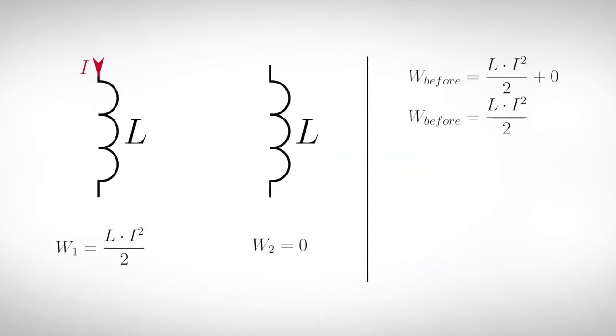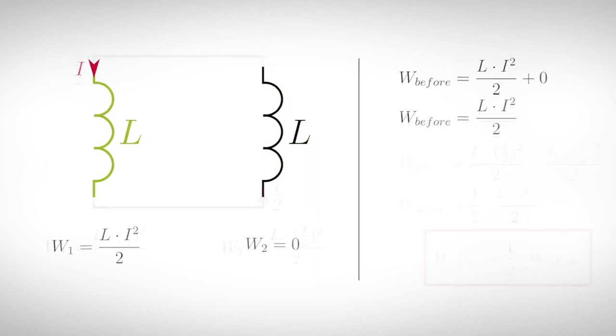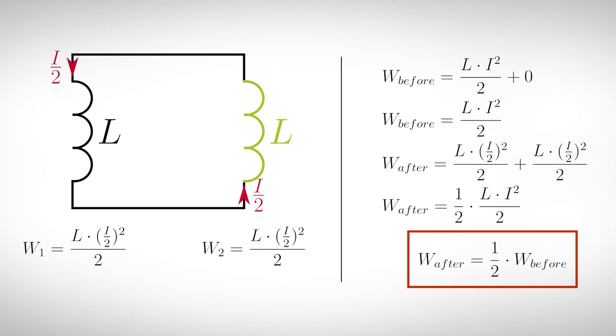Now we have seen what we can do with just switches and capacitors. But there is a second important storage element in electronics, the inductor. A similarity to the capacitor paradox can also be observed in inductors. We can take two inductors and let a constant current flow through one of them. Next we connect a second inductor in parallel. A magnetic field will build up in the second one and energy will be transferred to it. Now only half of the original current flows through both coils. If we again calculate the energy before and after, we see that half of the energy is lost in the exchange process.